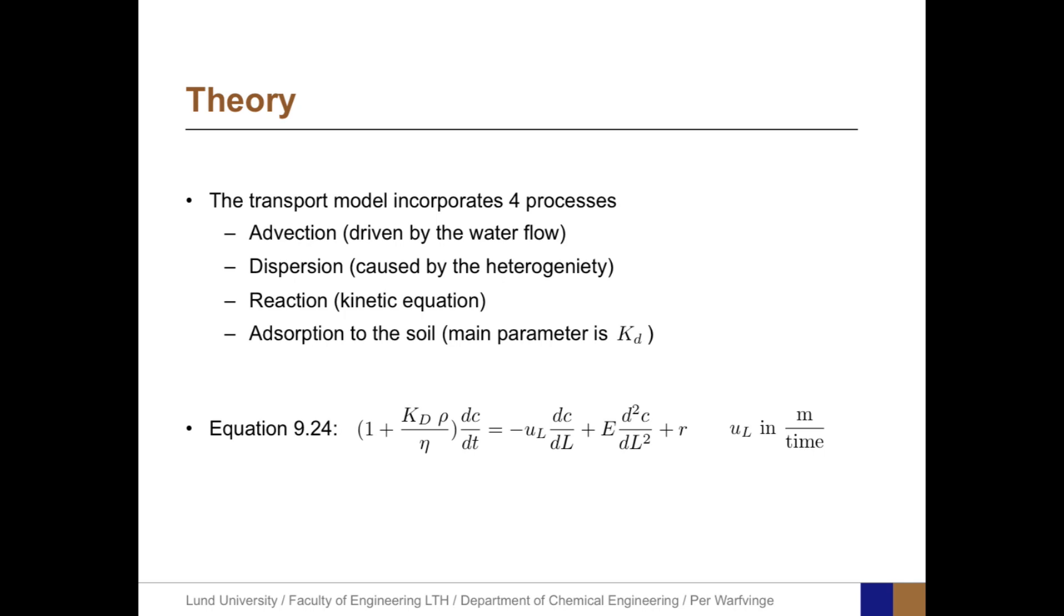On the left-hand side, we have the change in concentration with time at a certain point in space depends on the advective term, quantified by the flow velocity, which is in meter per unit time, and the concentration gradient. The second term is the dispersion, with the dispersion coefficient E, times the second derivative of the concentration with space. And finally, we have the kinetic equation R, which describes the chemical reaction.